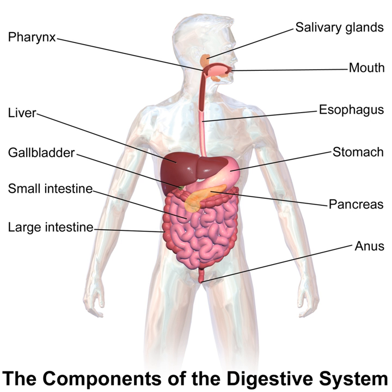Digestion of some fats can begin in the mouth where lingual lipase breaks down some short-chain lipids into diglycerides. However, fats are mainly digested in the small intestine. The presence of fat in the small intestine produces hormones that stimulate the release of pancreatic lipase from the pancreas and bile from the liver, which helps in the emulsification of fats for absorption of fatty acids. Complete digestion of one molecule of fat results in a mixture of fatty acids, mono- and diglycerides, as well as some undigested triglycerides, but no free glycerol molecules.